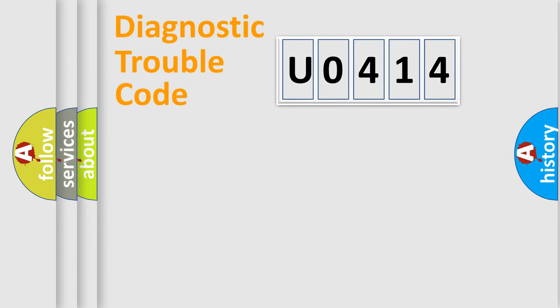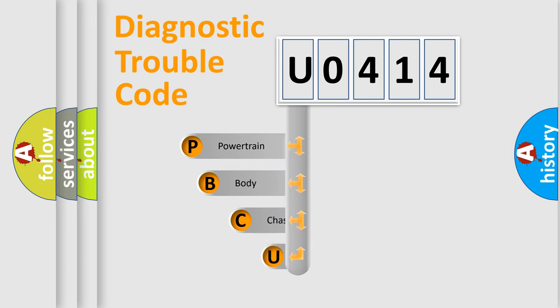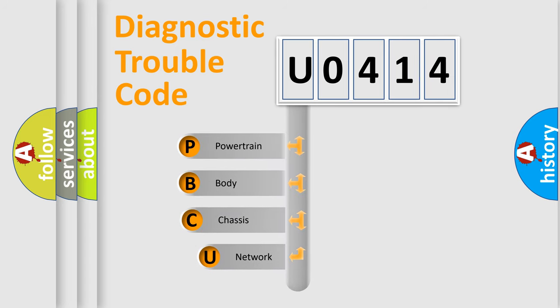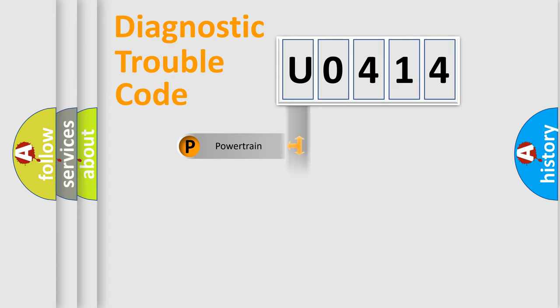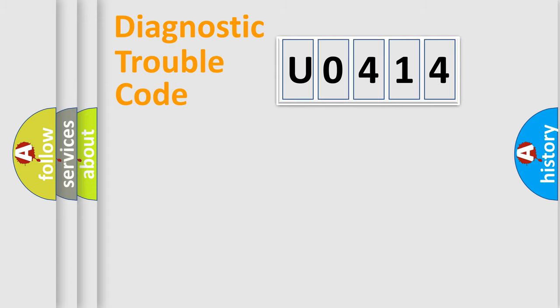Let's do this. First, let's look at the history of diagnostic fault code composition according to the OBD2 protocol, which is unified for all automakers since 2000. We divide the electric system of an automobile into four basic units: Powertrain, Body, Chassis, and Network.